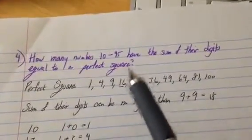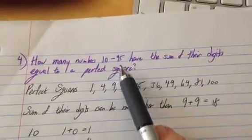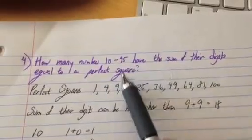This one's fun. So they want to know how many numbers between 10 and 95 have their sum of their digits equal to a perfect square.